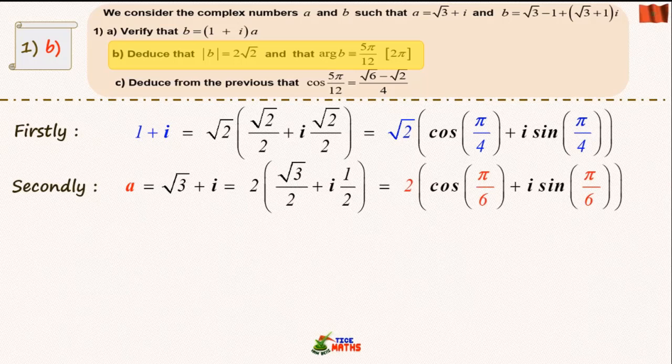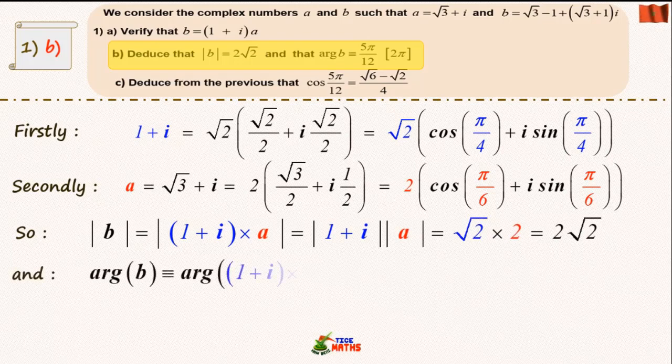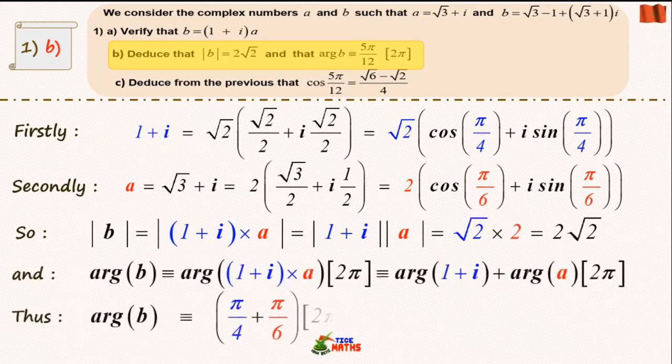Thus we can deduce the modulus of b and the argument of b through the properties of the modulus and the argument of a product of two complex numbers.